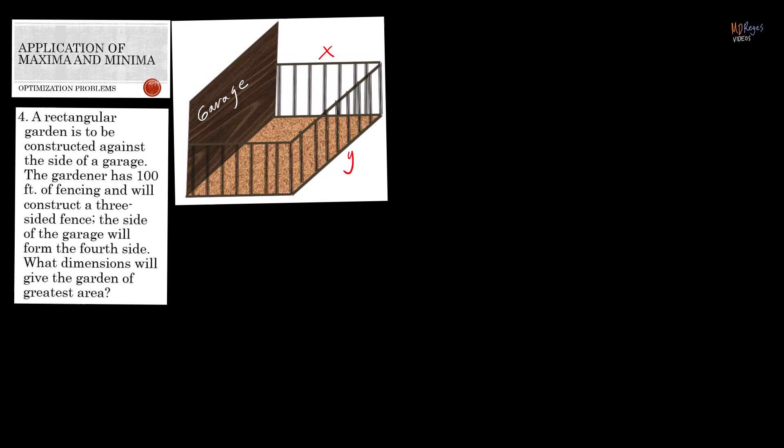Since the garden is rectangular, the other width side also measures x. We have a constraint: the gardener only has 100 feet of fencing. So if we add x plus x plus y, the sum must equal 100 feet. Simplifying, we get 2x + y = 100.